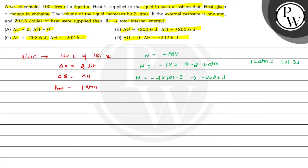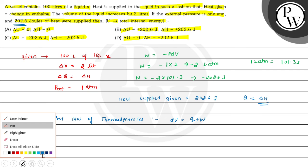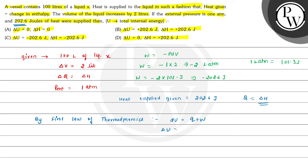It is given that heat supplied equals 202.6 joules. By the first law of thermodynamics, ΔU = Q + W. So ΔU = 202.6 + (-202.6) = 0.